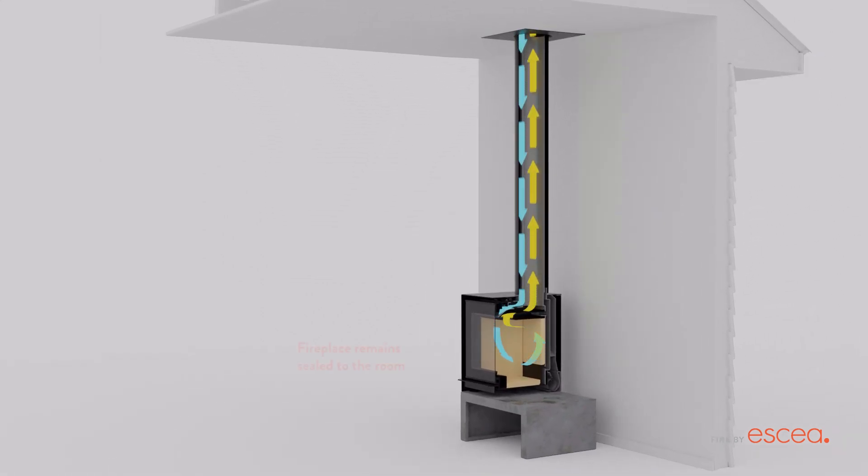The outside air travels down the outer layer of the flue. This air is used to help the fireplace burn while keeping the fireplace sealed to the room. The exhaust air travels up the center of the dual layer flue and exits back outside the house.